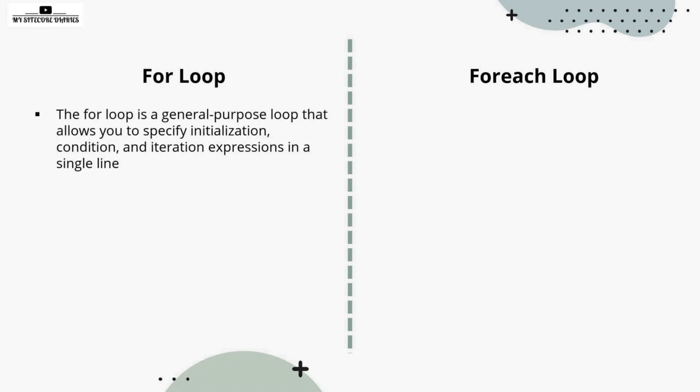The for loop is a general purpose loop that allows you to specify the initialization, condition, and iteration expression in a single line. You can use it for a general purpose where you can initialize the value, initialize the condition, give the condition, and have the expression executed. This is how your for loop will work.